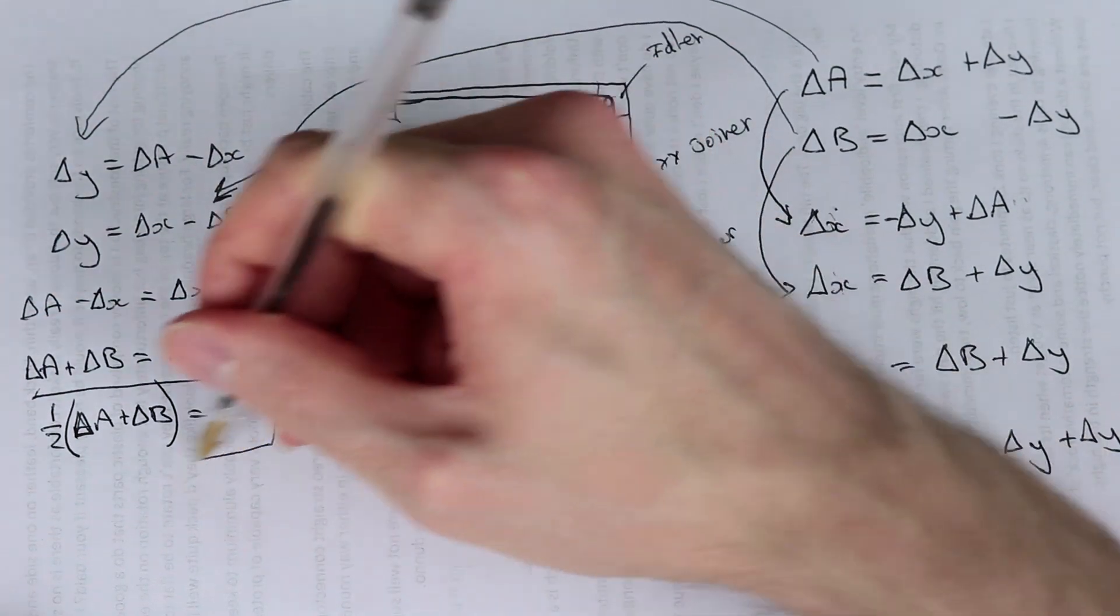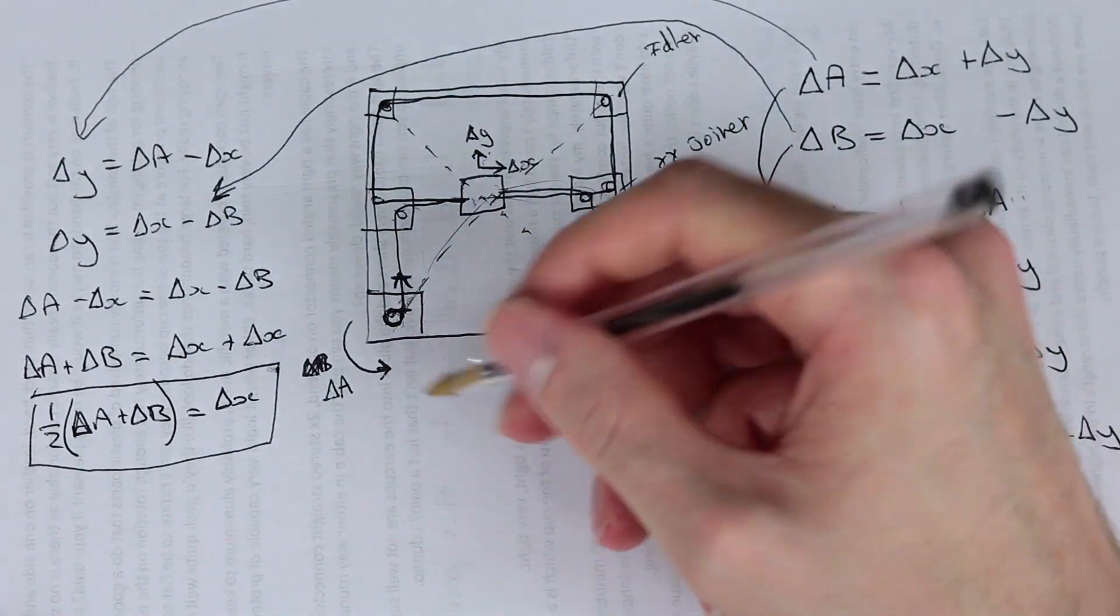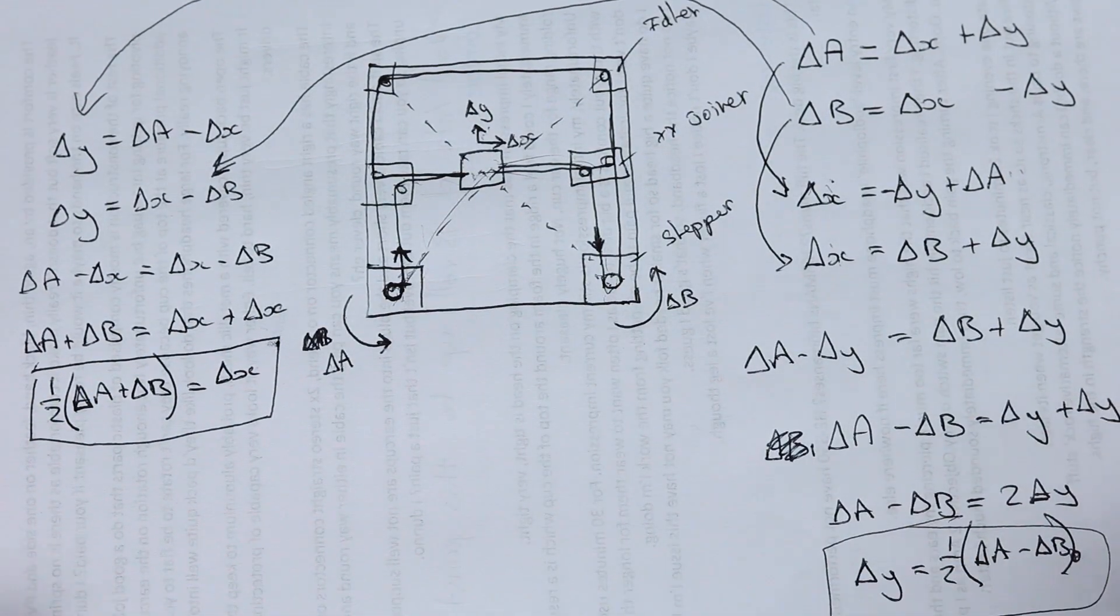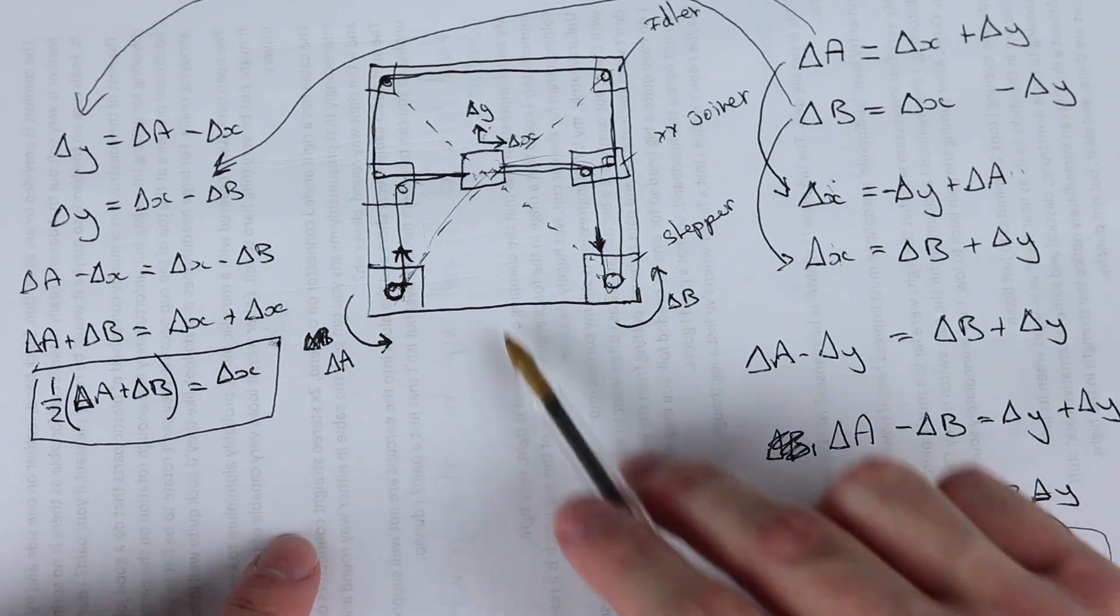So now we have these two equations of motion. This one for delta X and this one for delta Y. And that's how we obtain our motion.